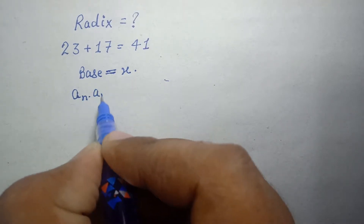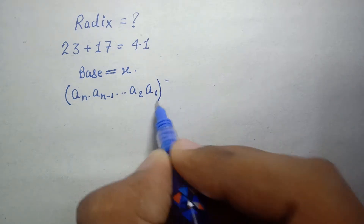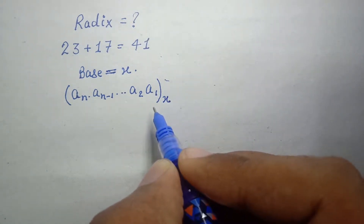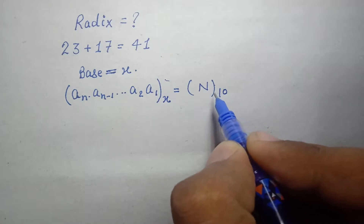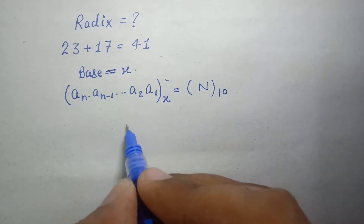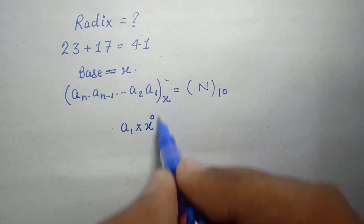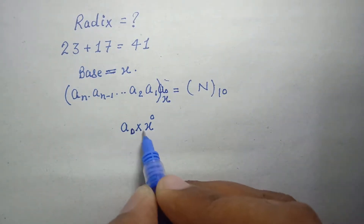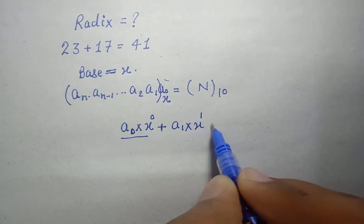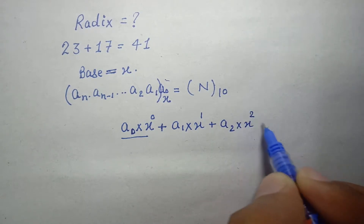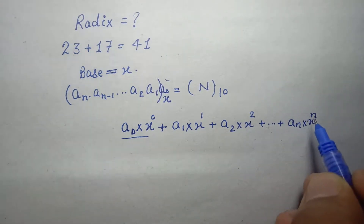As you know, if a number looks like a_n, a_(n-1), ..., a_1, a_0 and it has base x, then to convert this number into a base-10 number, we use: a_0 into x to the power 0, plus a_1 into x to the power 1, plus a_2 into x to the power 2, and so on up to a_n into x to the power n.